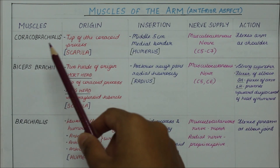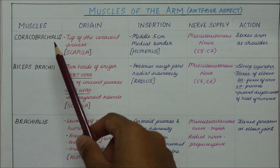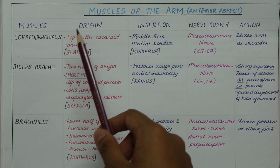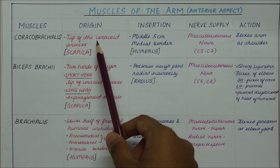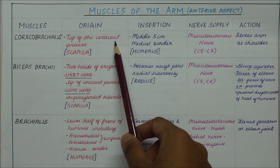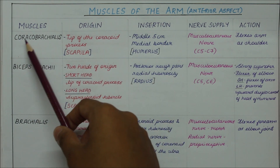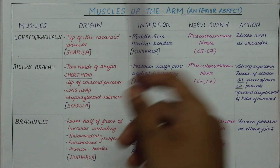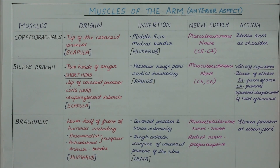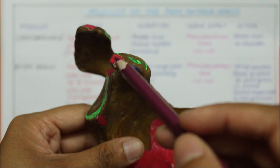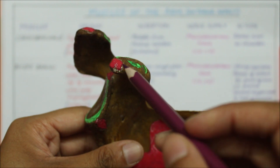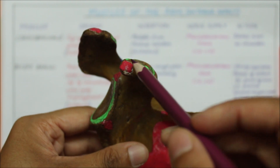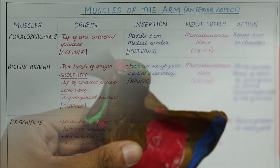Let's begin with the coracobrachialis muscle. It originates from the tip of the coracoid process of the scapula. In order to remember this we can relate the word coracoid with the coraco of the coracobrachialis. This is the coracoid process and the coracobrachialis originates from the tip of the coracoid process right here.